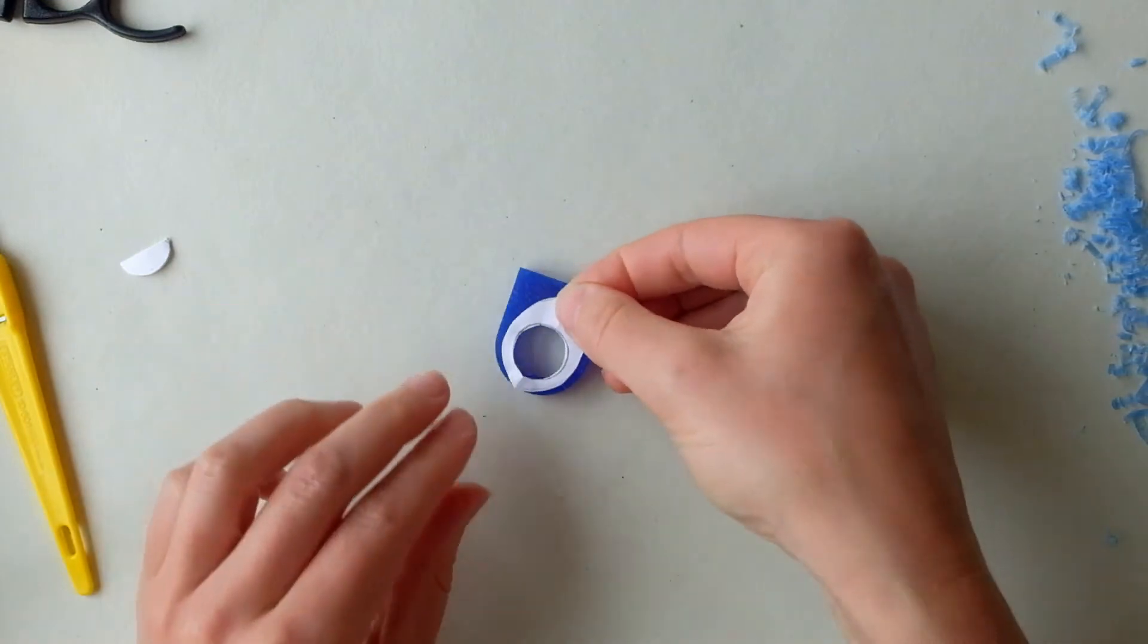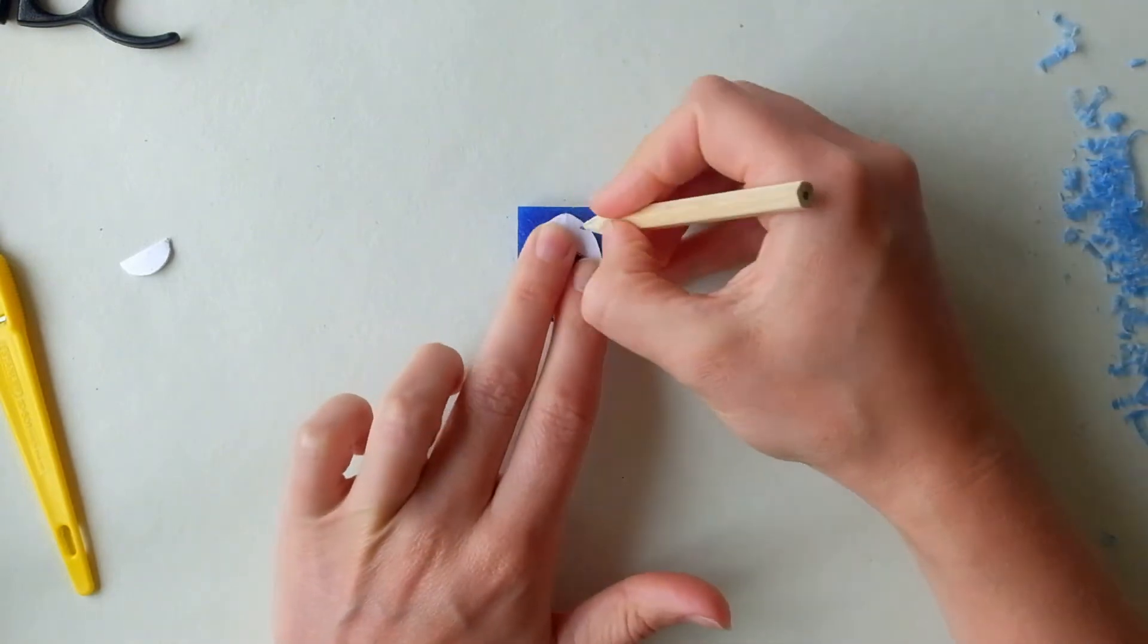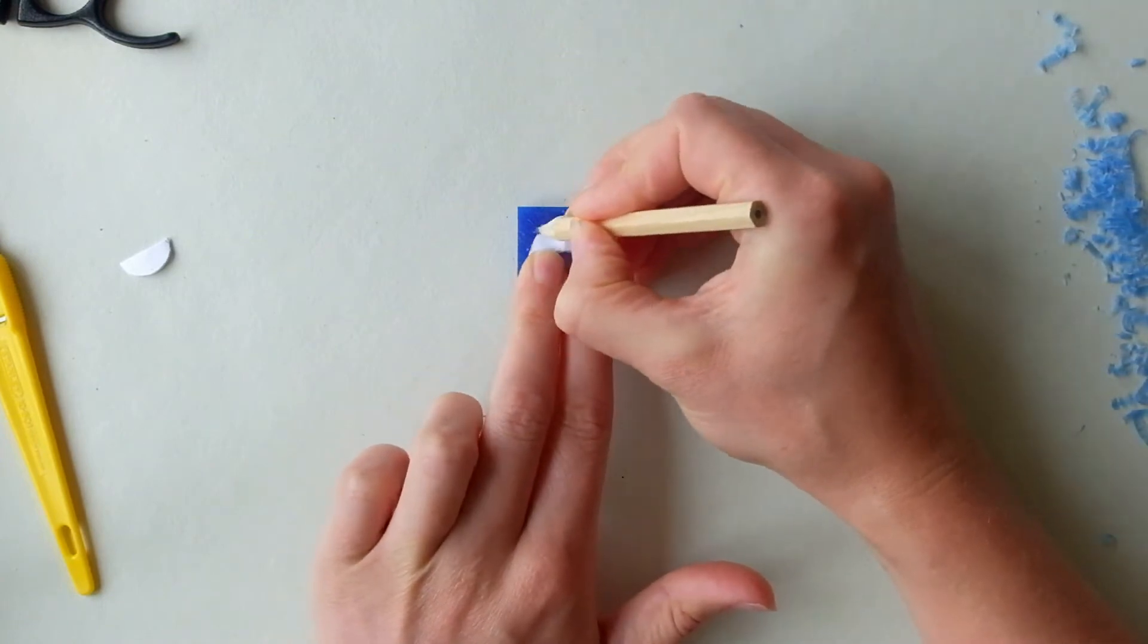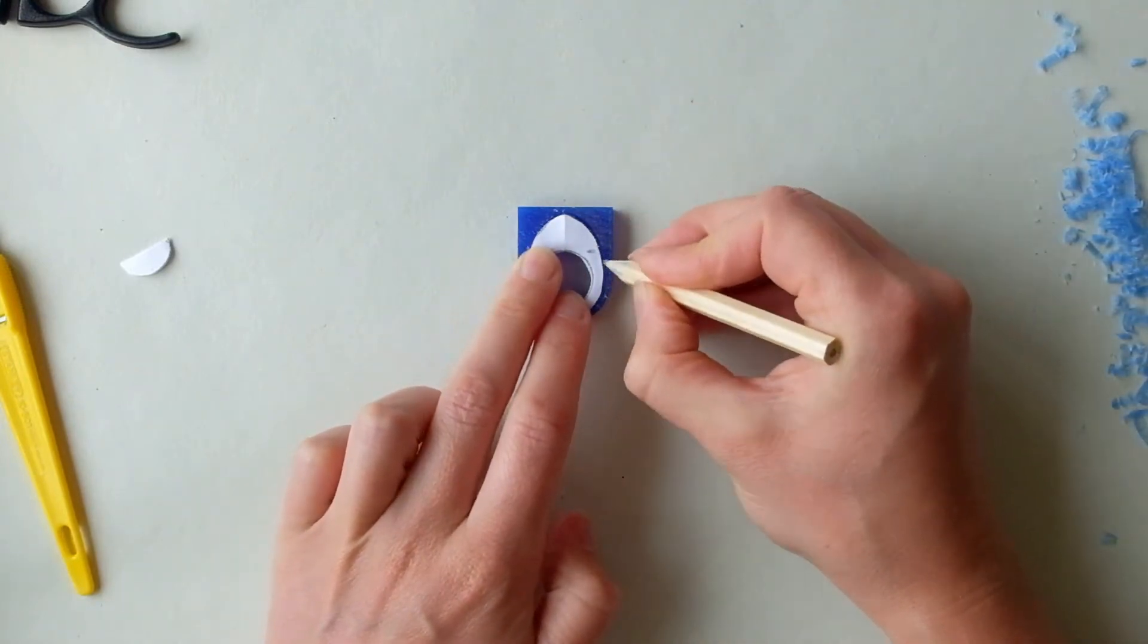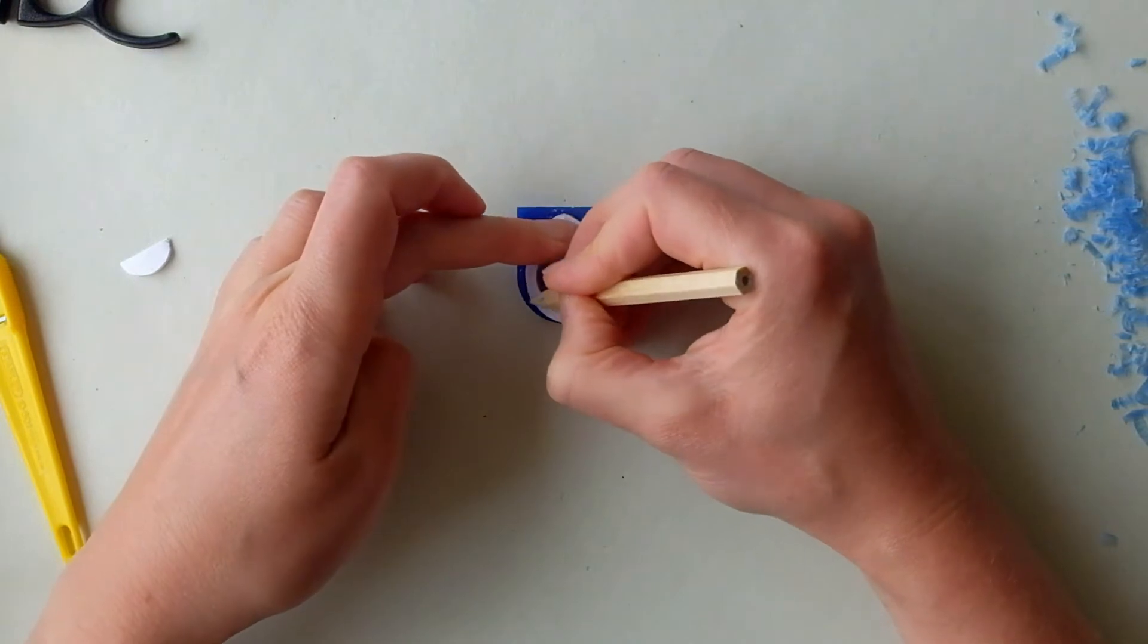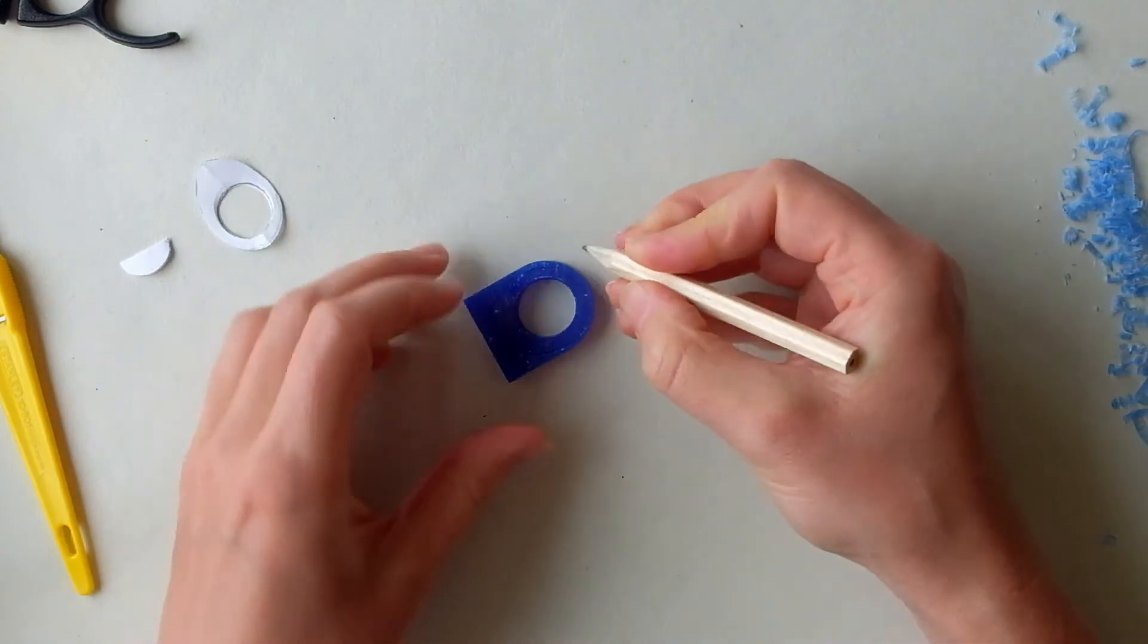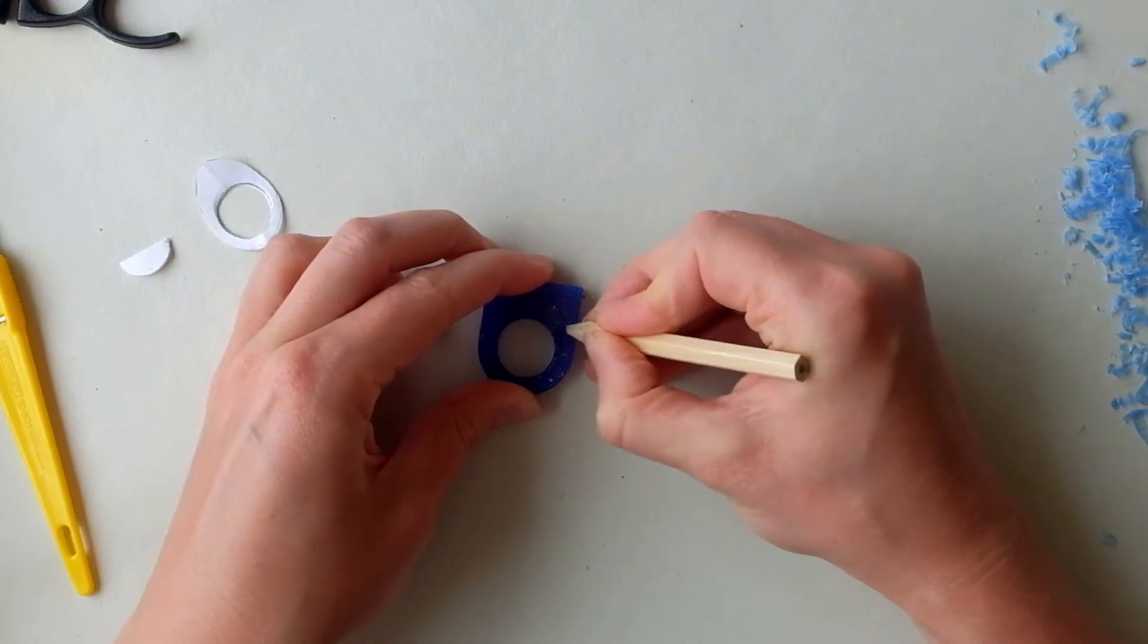So now that I've got my template cut out, I'm going to place that onto my wax and I'm going to start to draw around it. Now that I've got my main outline sketch on there, I'm going to thicken the lines and make sure that I can really see them clearly.